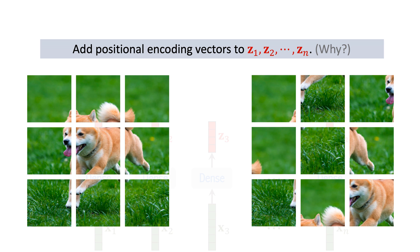If the z vectors do not contain the positional encoding, then the two images on the left and right will be the same from the transformer's perspective. This is unreasonable because the images on the left and right are different. We hope transformer knows the two images are different.